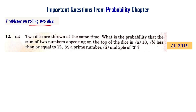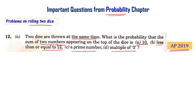Problems on rolling two dice. The probability chapter is very important. Two dice are thrown at the same time. What is the probability that the sum of the two numbers appearing on top of the dice is: 10, less than or equal to 12, a prime number, or a multiple of 3. This is the AP 2019 public exam. Let us now solve this problem.